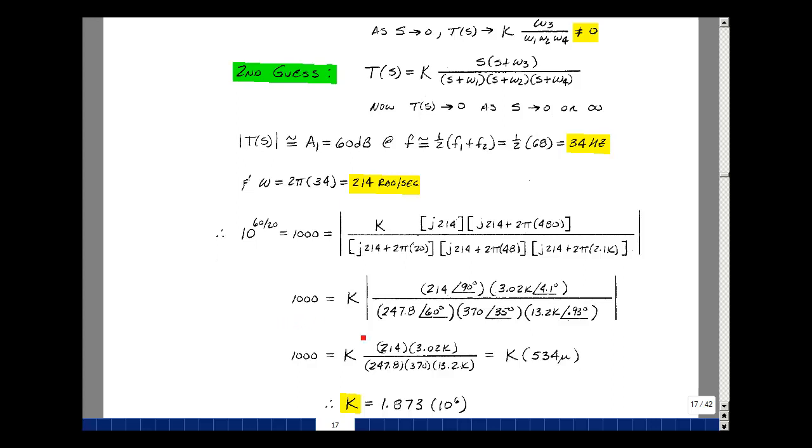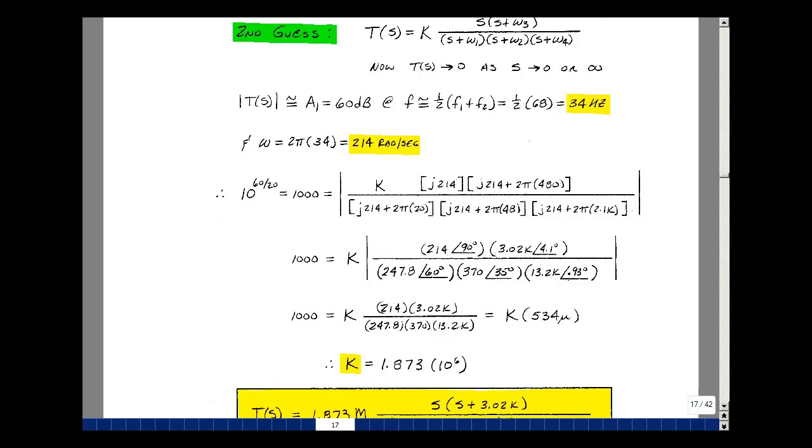Because I know the magnitude is 1,000, I can then solve for K by just finding the magnitude of these expressions. And so it'd be 214 times 3.02k divided by 247.8 and divided by 370 and divided by 13.2k. So that's my result right here. That turns out to be 534 times 10 to the minus 6. So now I can solve for K by taking 1,000 and dividing by this number and you get 1.873 million.